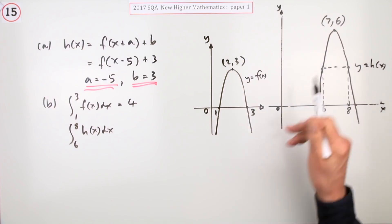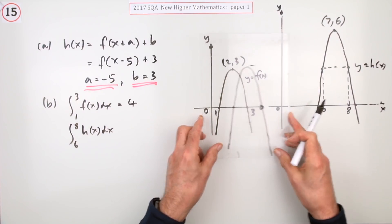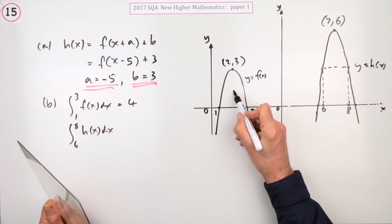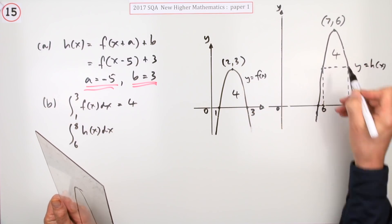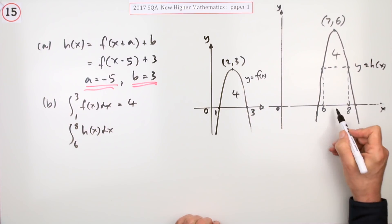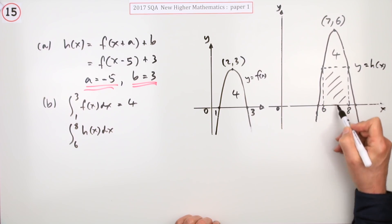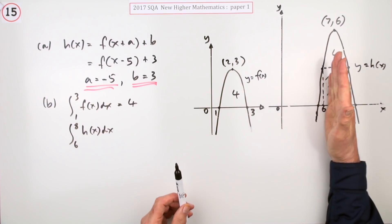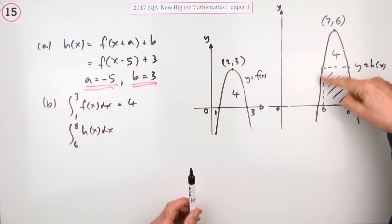So this part has shifted up there, this part has shifted up to here, which means if that area is 4, then this area is 4. So all you've got to do is add on this rectangle. Not these two parts because it says the integral from 6 to 8. You start creating your vertical lines at 6 and finish at 8.